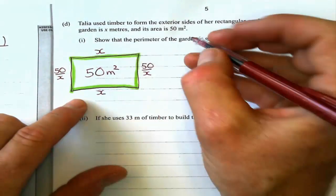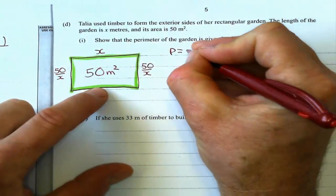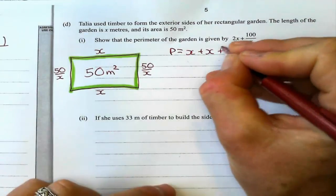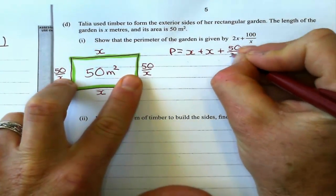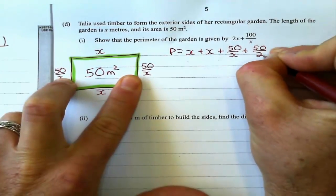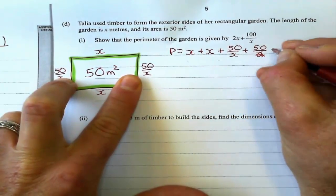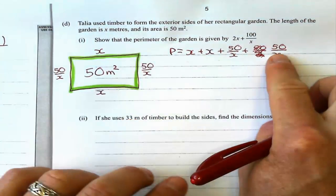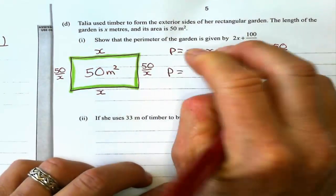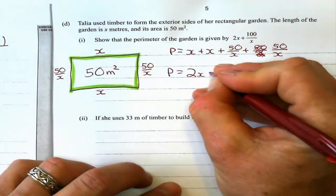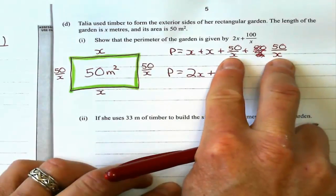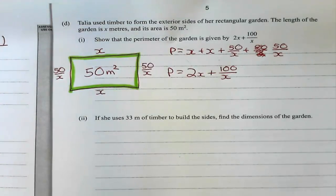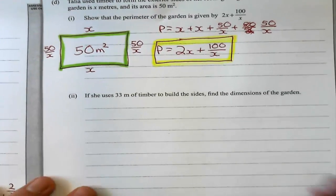Well, the perimeter is all the sides added up. So the perimeter is x plus x plus 50 over x plus 50 over x. These two sides give me 2x. When I'm adding fractions with the same denominators, I just add the numerators. And that's just 100 over x.